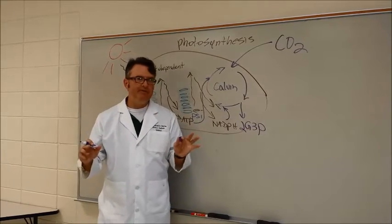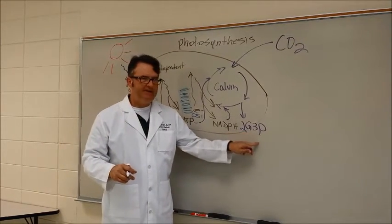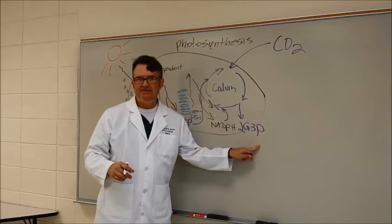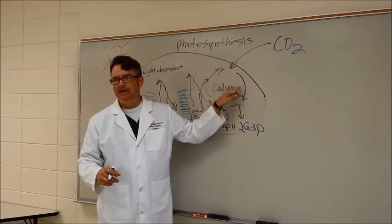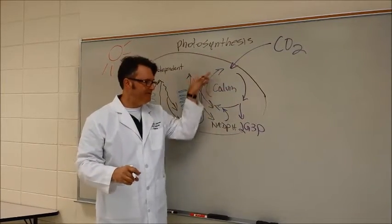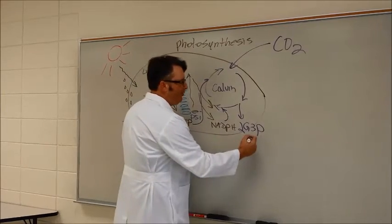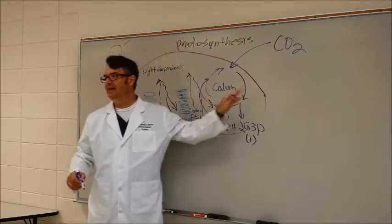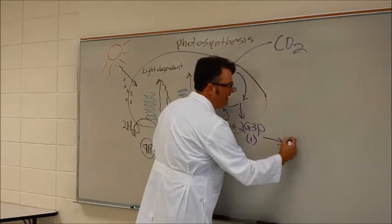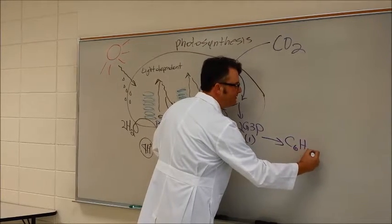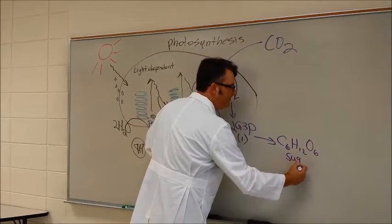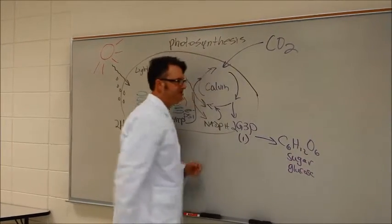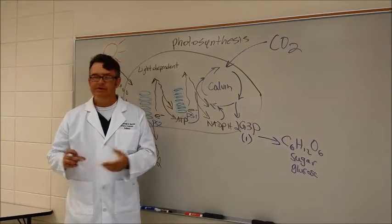What I've learned through my research though is these each have three carbons each, but five out of six of these carbons have to be used to regenerate an intermediate chemical so that for every turn of the cycle you only get one usable carbon. And so it actually takes six turns of this cycle to generate what you and I would recognize as C6H12O6. It's sugar or glucose.